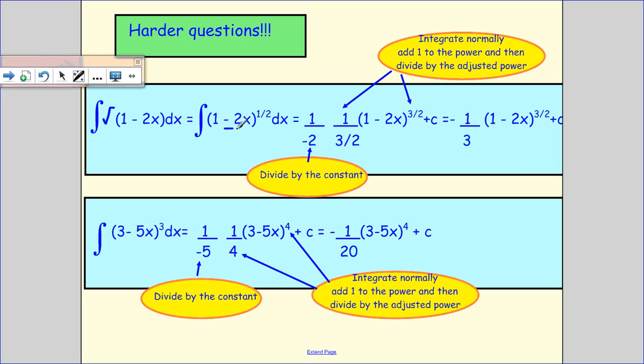So I divide by my constant. So there's my constant. So I divide by that. And then if you remember how to integrate this, you add 1 back to the power. So half plus 1 would give me 1 and a half, 3 over 2. And then I divide by my 3 over 2.